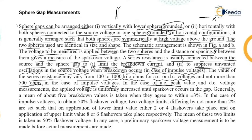The series resistance may vary from 100 ohms to 1000 kilohms for AC or DC voltages, and not more than 500 ohms in case of impulse voltages, because the impulse voltage exists for only a small period but may have oscillations. In case of AC peak value and DC voltage measurement, the applied voltage is uniformly increased until spark over occurs in the gap.